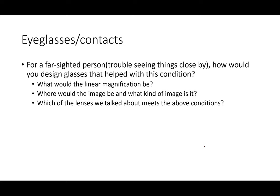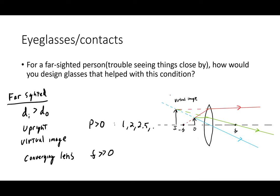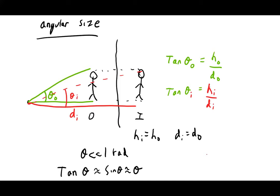For a farsighted person who has trouble seeing things close by, we need a lens that makes the image further away than the object — still virtual and upright. A converging lens with a large enough focal length achieves this when the object is placed between the lens and its focal length. Farsighted prescriptions have positive power values like one, two, or two and a half diopters.